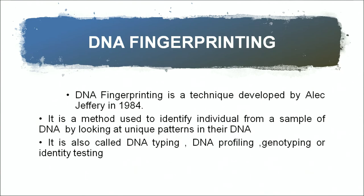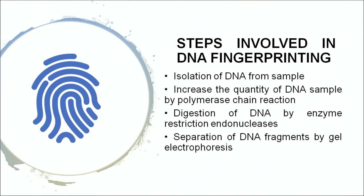DNA fingerprinting is also called DNA typing, DNA profiling, genotyping, or identity testing. The steps involved in DNA fingerprinting are: first, isolation of DNA from the sample; then increasing the quantity of the DNA sample by polymerase chain reaction; then digestion of the DNA by restriction endonuclease enzyme to create sticky ends; and then separation of DNA fragments by gel electrophoresis. DNA segments are separated in gel electrophoresis based on the charge and mass ratio of the DNA fragments, which are of different sizes and carry different charges.